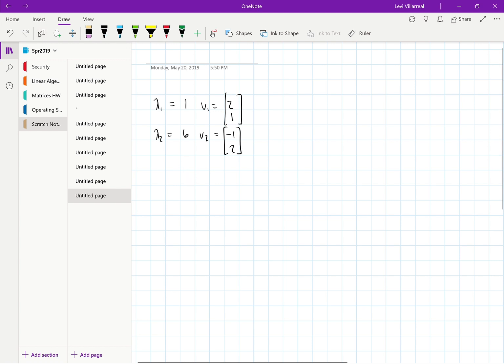So eigenvalues of 1, eigenvalues of 6, and the corresponding eigenvectors there before they're normalized.